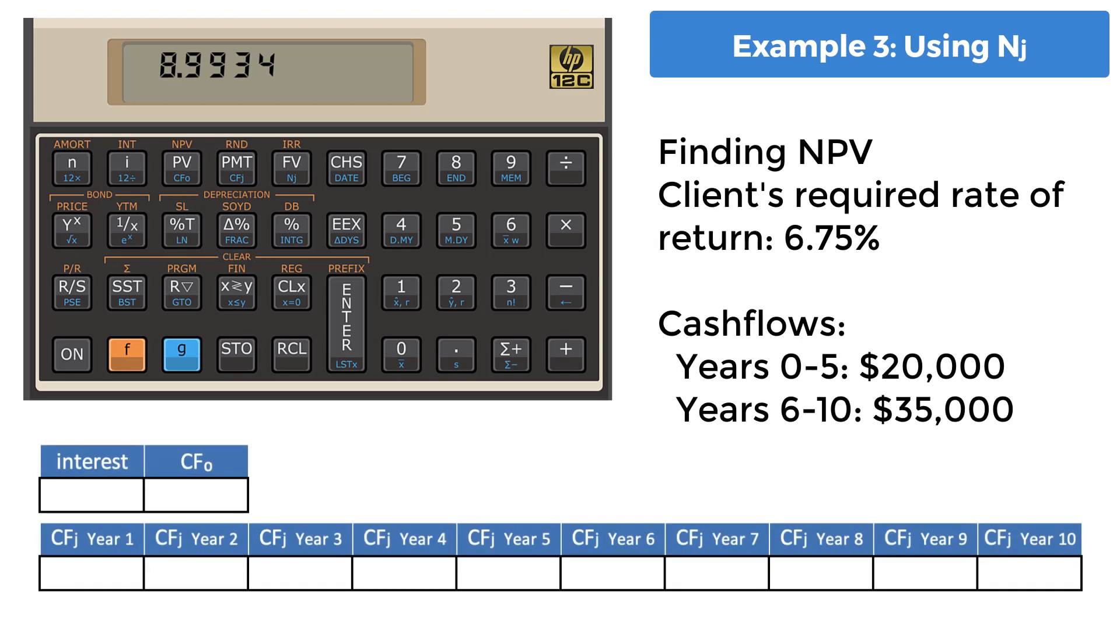Example 3, using the NJ key. Entering cash flows of the same amount for multiple years can be tedious. This is where the NJ key is essential in reducing the number of keystrokes needed to enter your data. Assume a client's required rate of return is 6.75%.